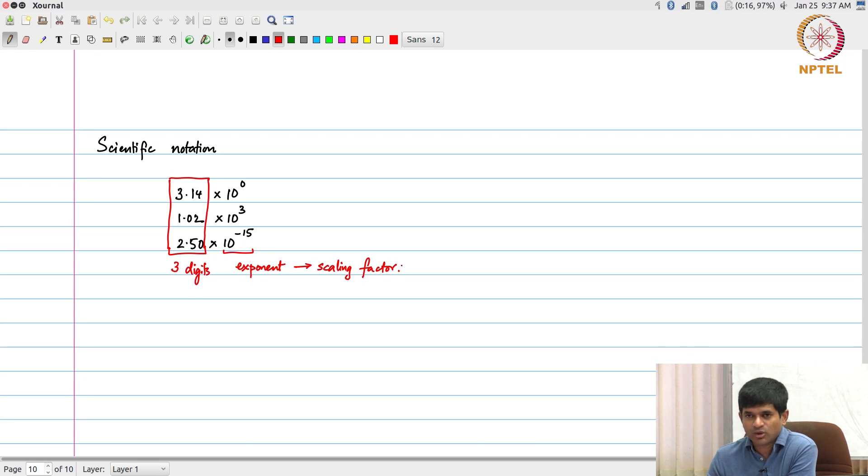But in scientific notation, every number carries its scale factor along with it. So 3.14 times 10 to the power 0, that number is carrying a scale factor of 0 along with it. 1.02 times 10 to the power 3 is carrying a scale factor of 10 to the power 3. 2.50 times 10 to the power minus 15 is carrying a scale factor of 10 to the power minus 15.